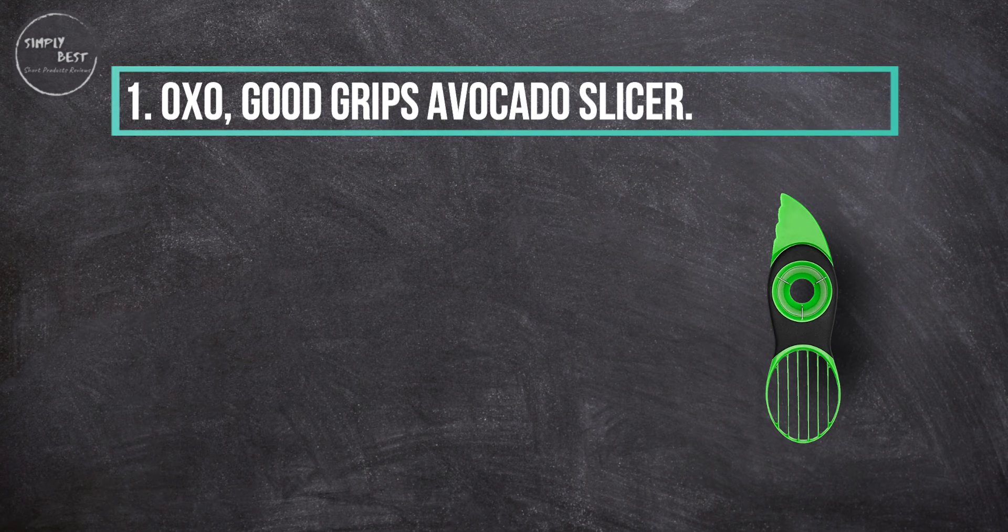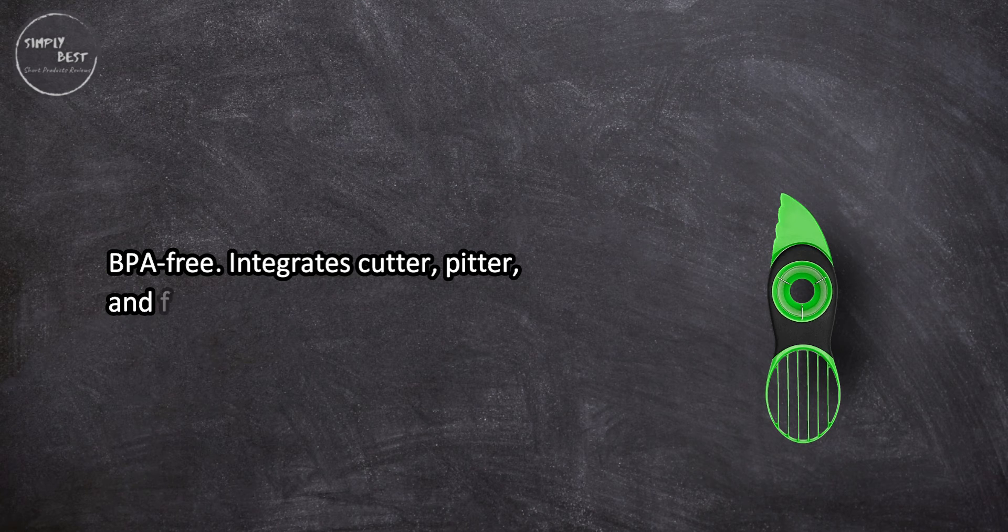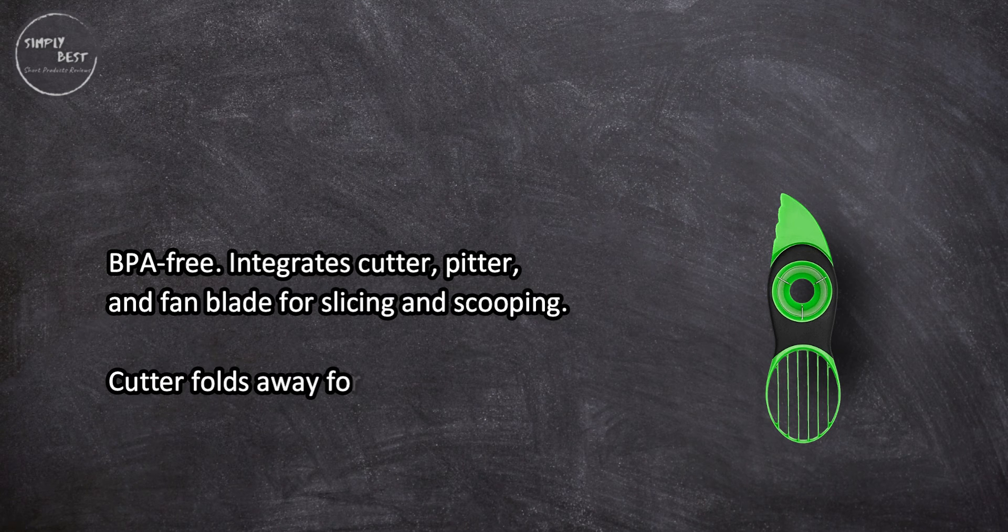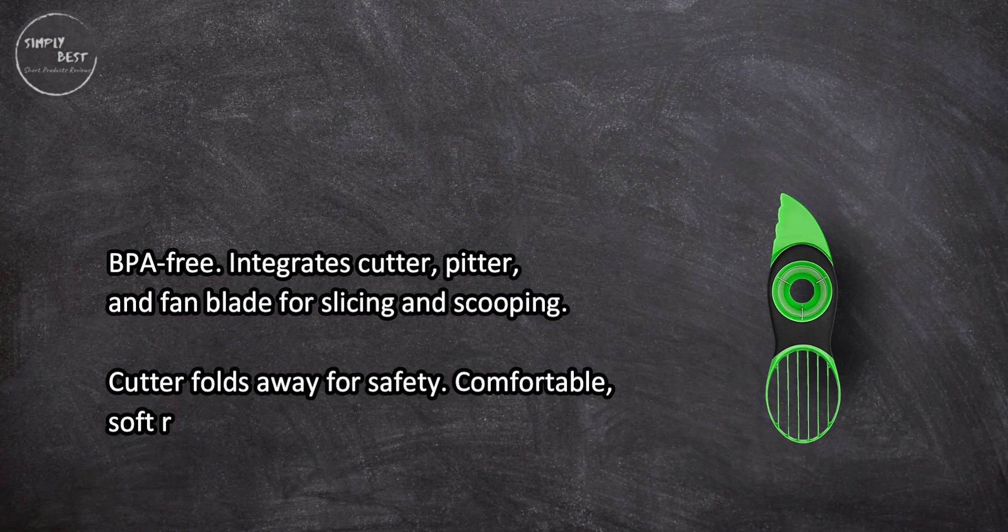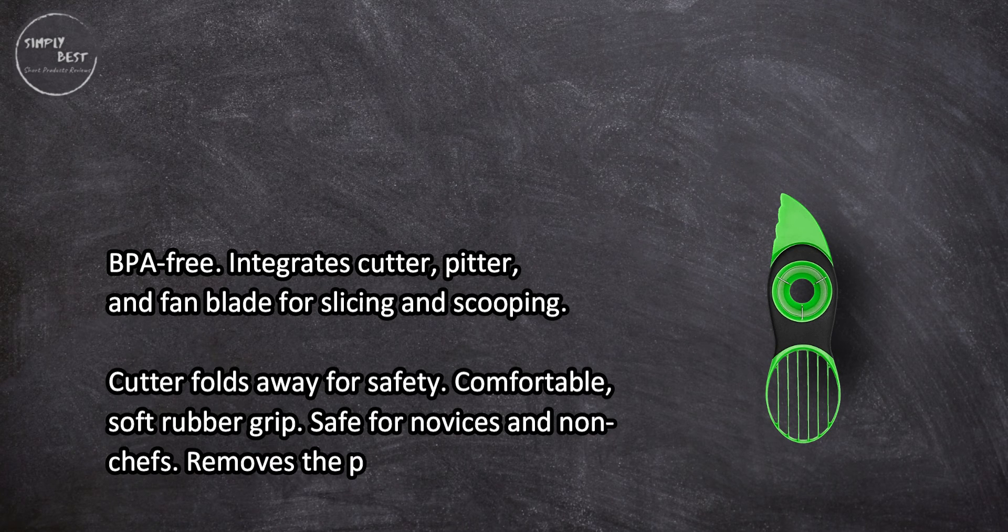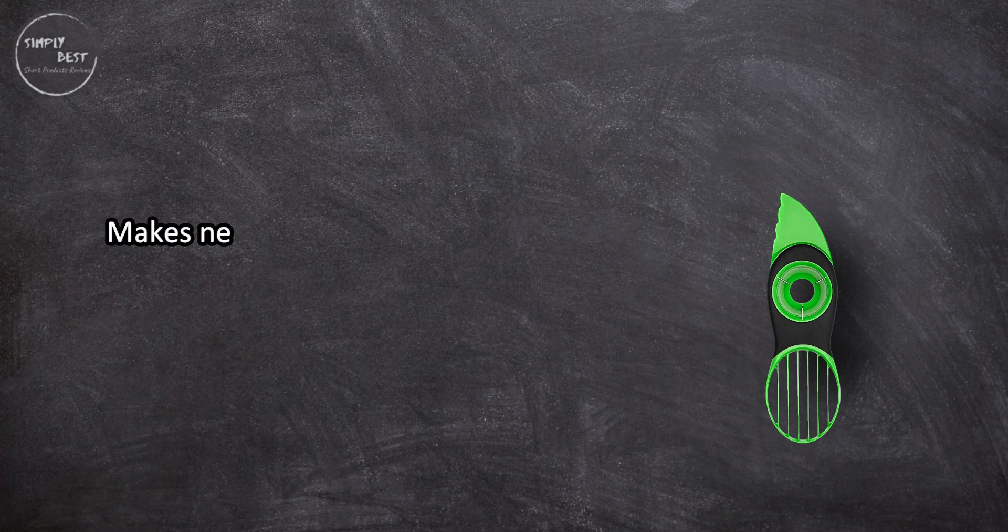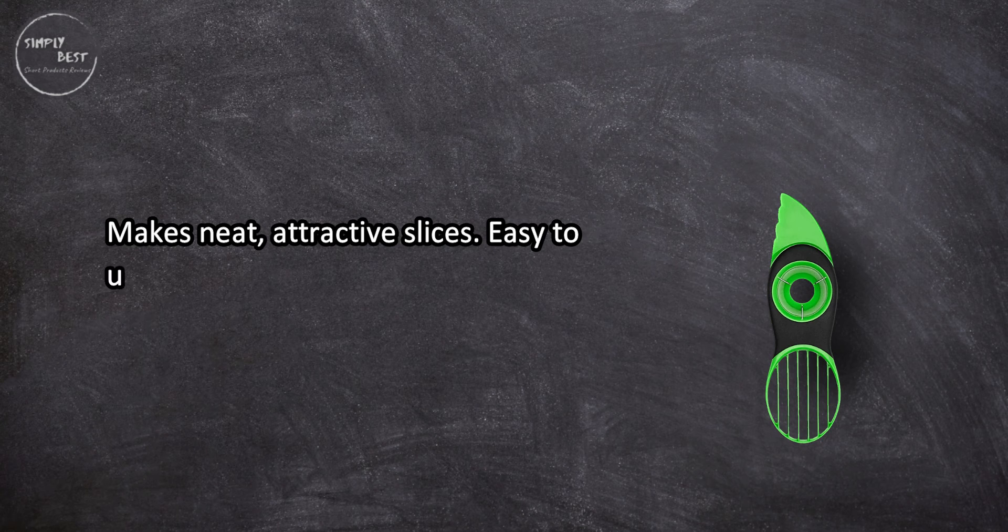At number one, So Good Grips avocado slicer. BPA free, integrates cutter, pitter, and fan blade for slicing and scooping. Cutter folds away for safety. Comfortable soft rubber grip, safe for novices and non-chefs. Removes the pit easily, makes neat attractive slices, easy to use, top rack dishwasher safe.